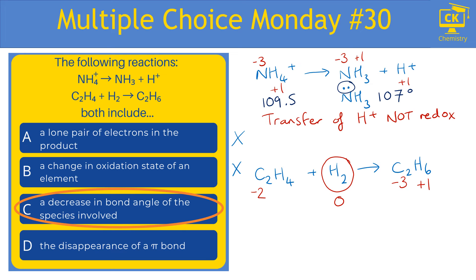Meanwhile, with ethene, we've got a carbon-carbon double bond and two hydrogens, meaning we're going to have a 120 degree bond angle because there are three areas of electrons. Whereas in ethane, each of those carbons now has four bonds around it, giving us the standard tetrahedral angle of 109.5. So that is a reduction too.